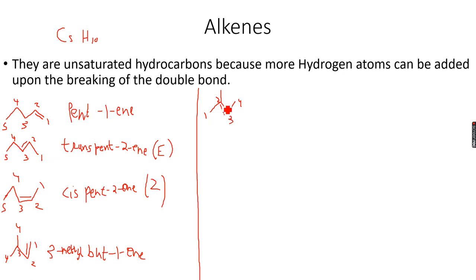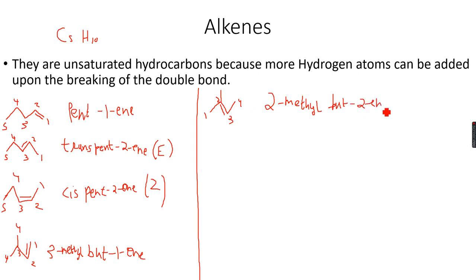The first thing you see is that there is a methyl group on the second carbon atom, so this becomes 2-methyl. The longest chain has four carbon atoms, so it's 'but', and the carbon-carbon double bond is on the second carbon atom, so 2-ene. This gives us 2-methyl but-2-ene: 2-methyl because the methyl group is on the second carbon, 'but' because there are four carbons in the main chain, and 2 because the alkene group is on the second carbon atom.